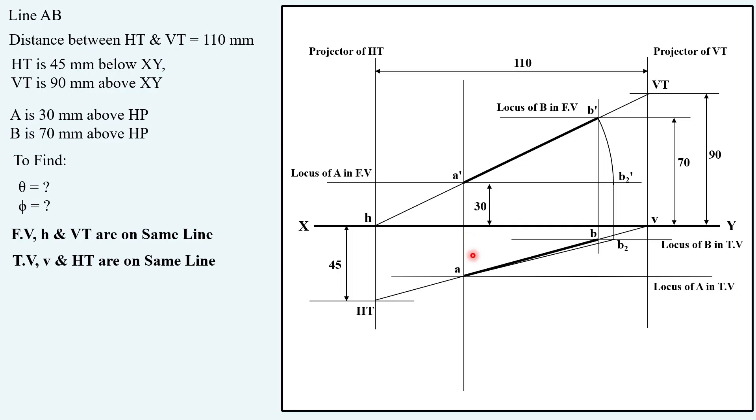Now take this AB2 in your compass, keep compass on A dash, cut an arc on the locus of B in front view with corresponding name B1 dash and join it. So you have completed the solution. You have obtained the true length.